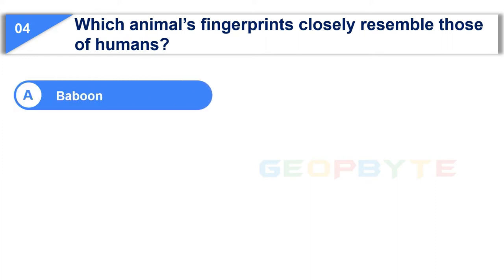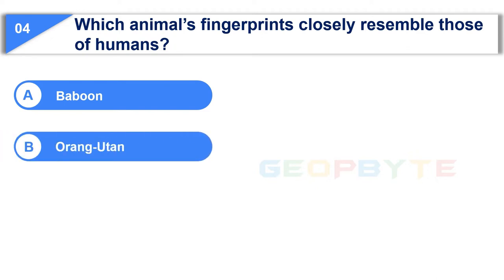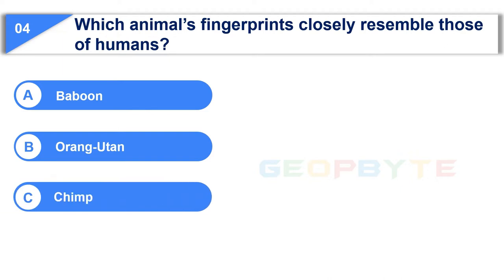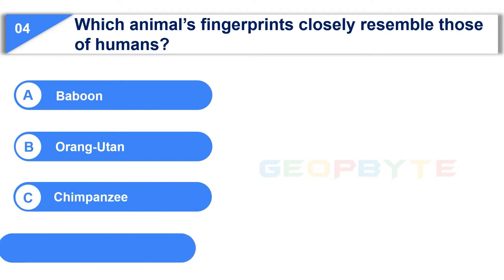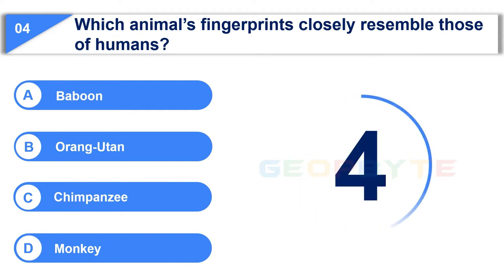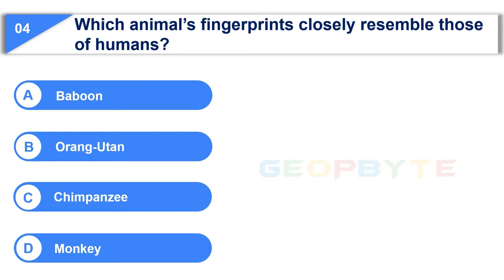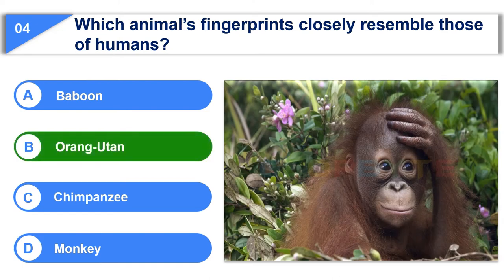Option A: Baboon. Option B: Orang-Utan. Option C: Chimpanzee. Option D: Monkey. Your time is up and the correct answer is Option B: Orang-Utan.